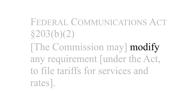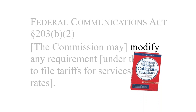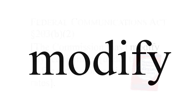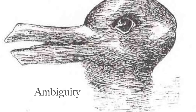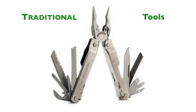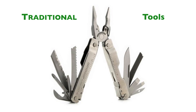'Modify' is a statutory term of art, and at least one dictionary endorsed the agency's usage. Wouldn't that make it reasonable? With language, ambiguity abounds — so even if some dictionaries would not count changing a whole lot as 'modifying,' shouldn't the ambiguity go to the agency under Chevron Step Two? Not so fast, the court says: we are not done with Step One yet — not until an ambiguity remains even after the traditional tools of statutory interpretation have been brought to bear.